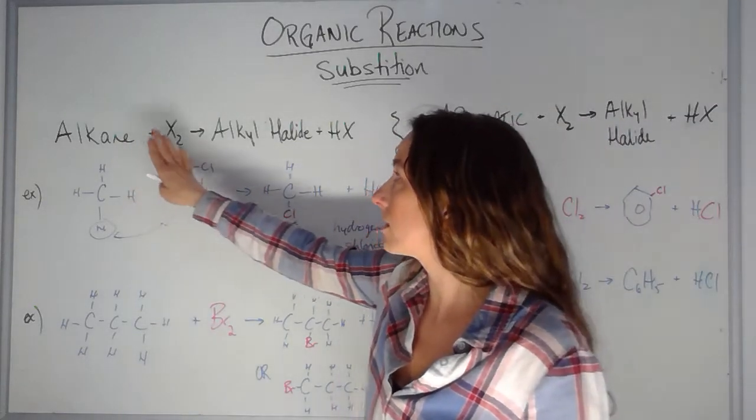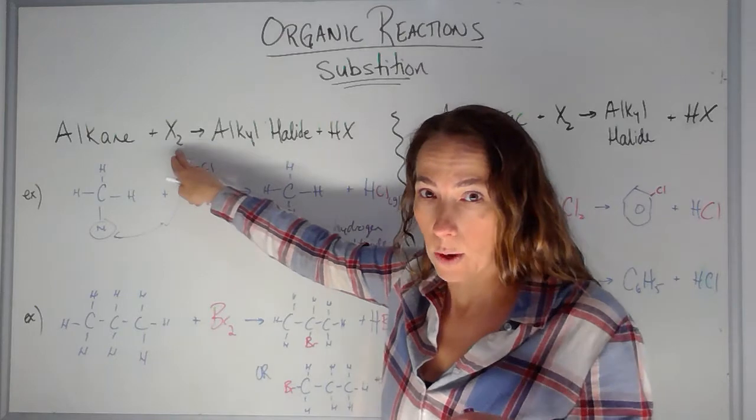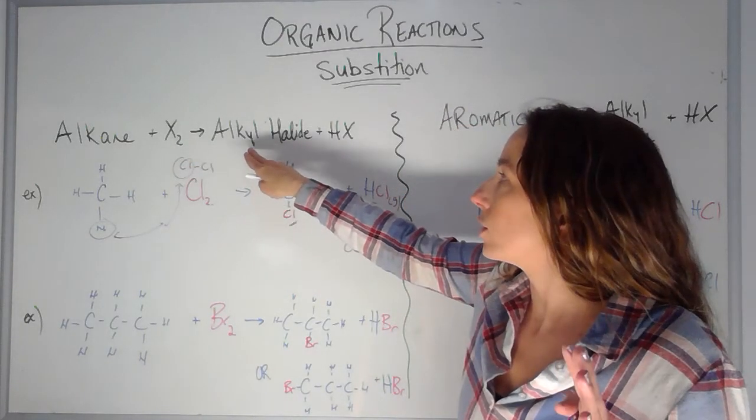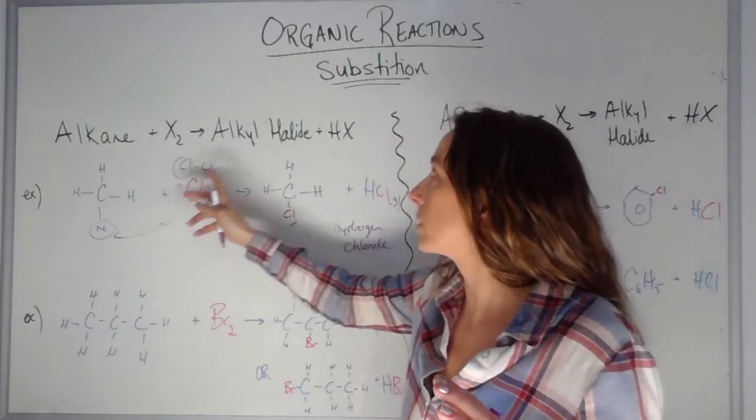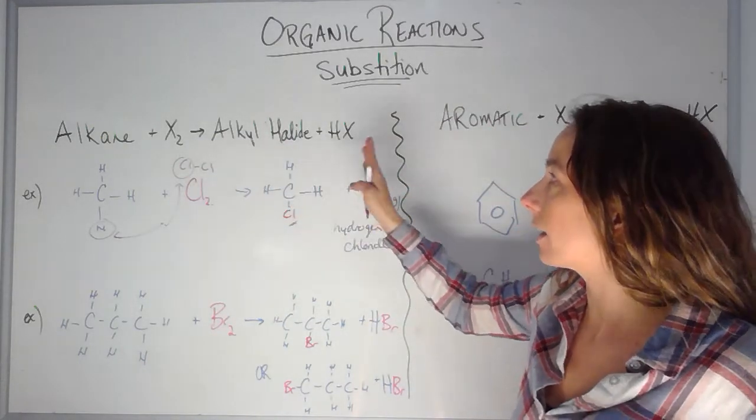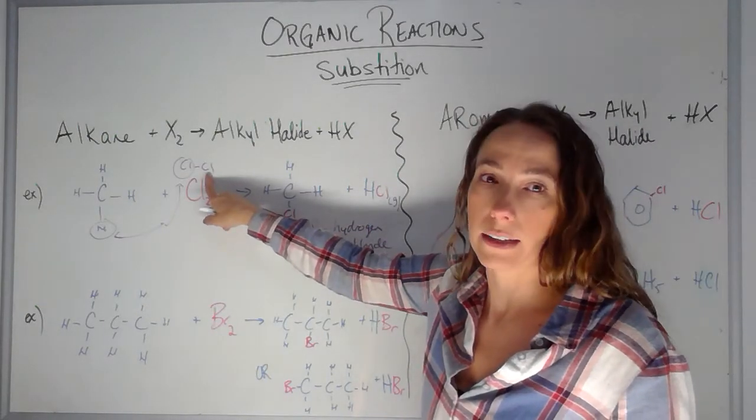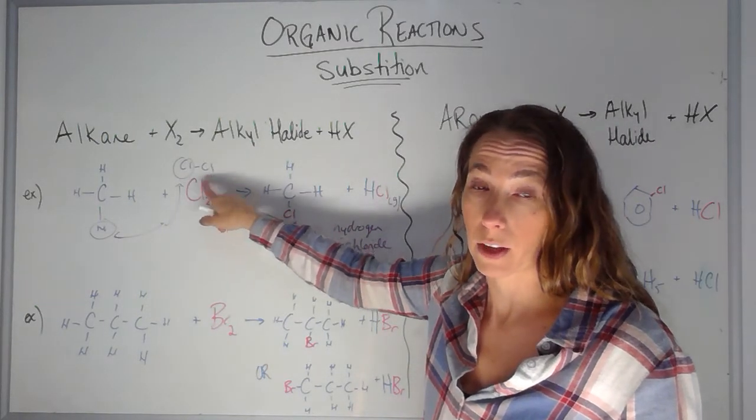So substitution happens with alkanes. This X squared could stand for any halogen. And what I'm going to do is I'm going to swap those two positions. And so I ended up with an alkyl halide and the H coming off of the field bonded to that Cl like that.